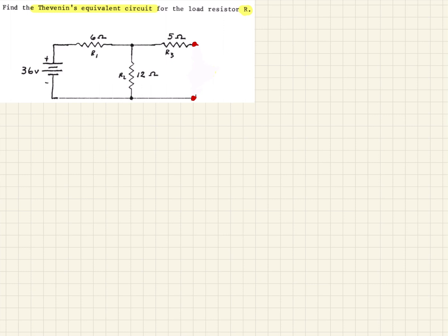So this is easy enough. The first thing we want to do is calculate R Thevenin. And so R Thevenin, of course, is looking back into this circuit here. And remember, we short out voltage sources when we do that. So we can short this guy out here.